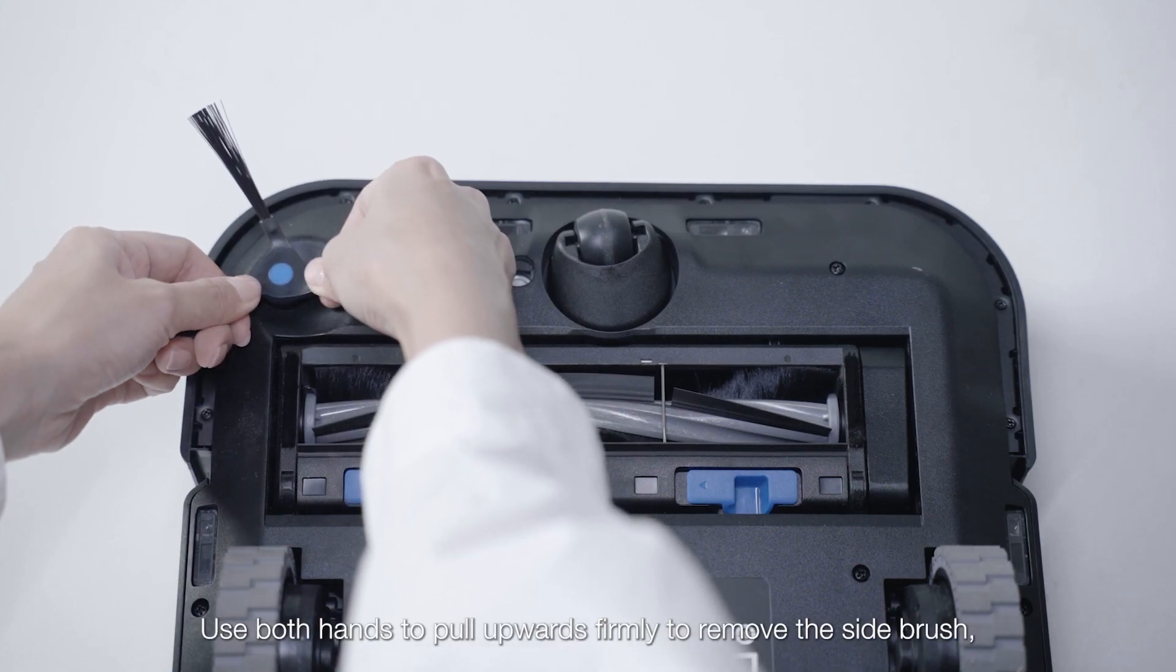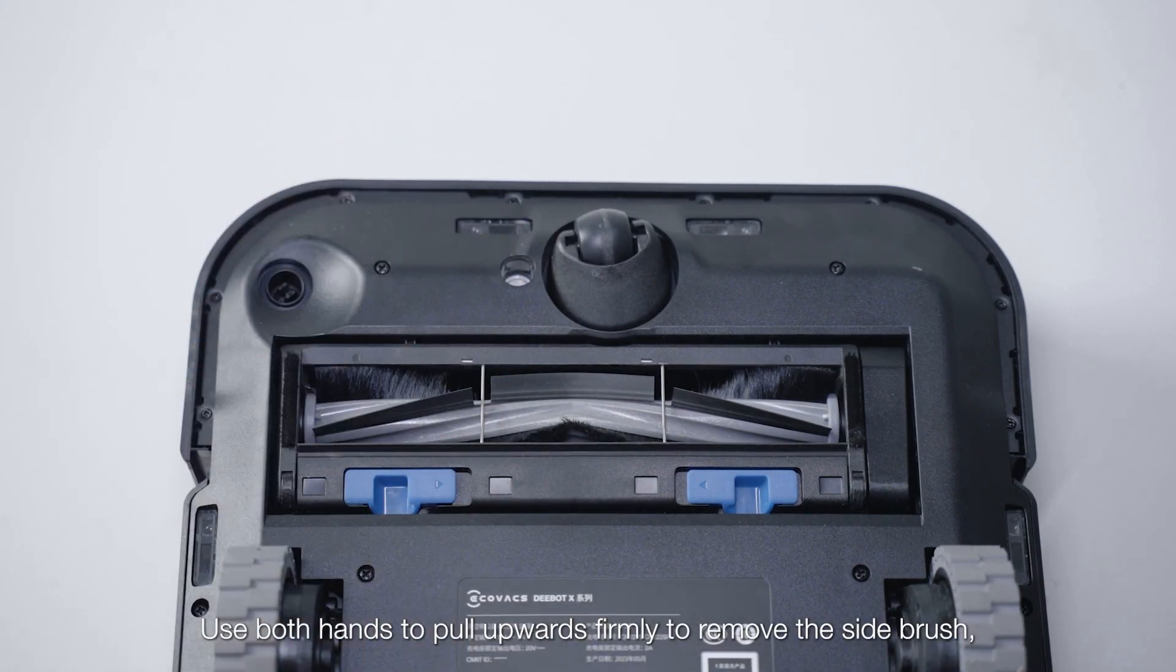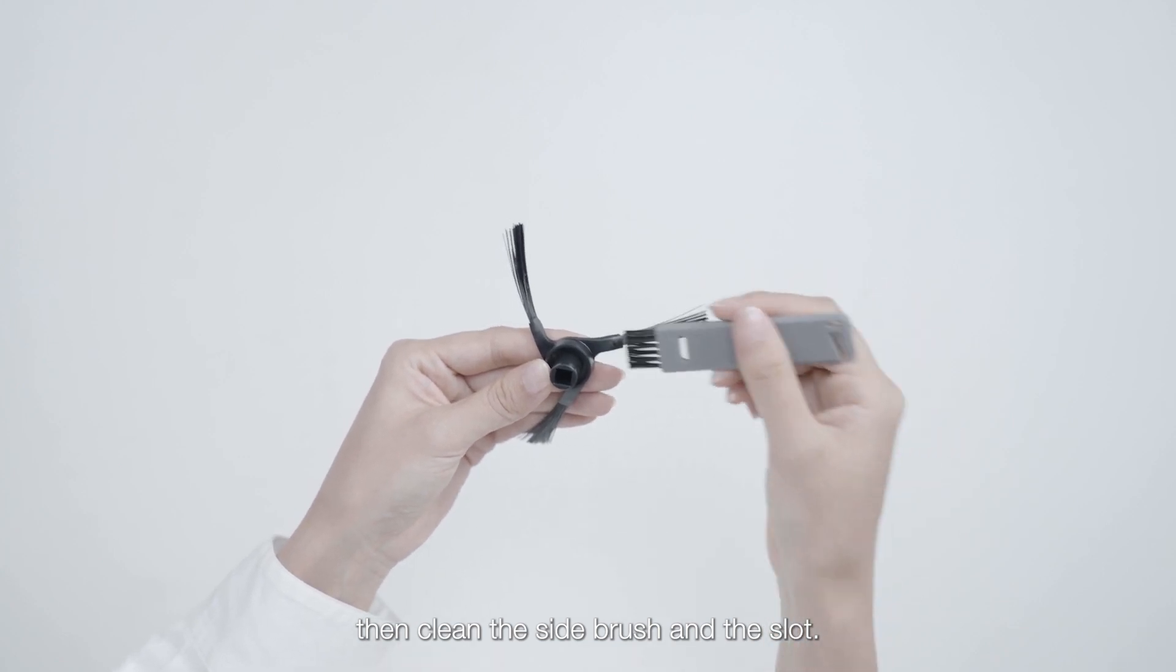Use both hands to pull upwards firmly to remove the side brush. Then clean the side brush and the slot.